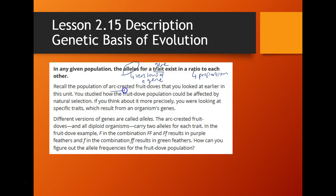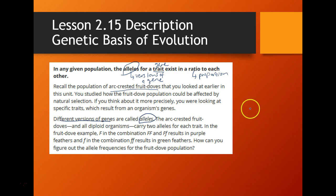Recall the population of arc-crested fruit doves — the birds with those brightly colored feathers we looked at earlier in this unit. We looked at how natural selection could affect them. Some birds had green feathers, others had purple feathers, and new predators were more likely to see the purple ones, so they were hunted more frequently, leading to the rise of the green-feathered fruit doves.